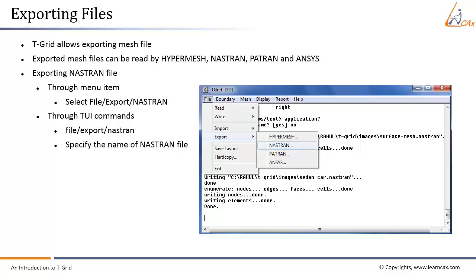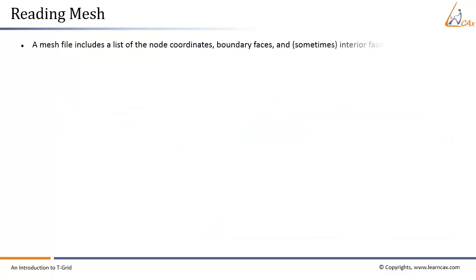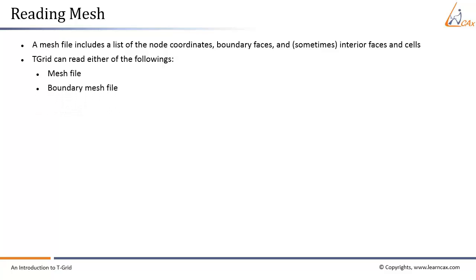A mesh file includes a list of node coordinates, boundary faces, and sometimes interior faces and cells. T-Grid can read the following file types: a T-Grid or GAMBIT mesh file; a boundary mesh file containing only surface mesh information; and a domains file, which is the domain section of the mesh file containing a list of node, face, and cell zone IDs that comprise each domain. The domain file has the extension '.dom'.